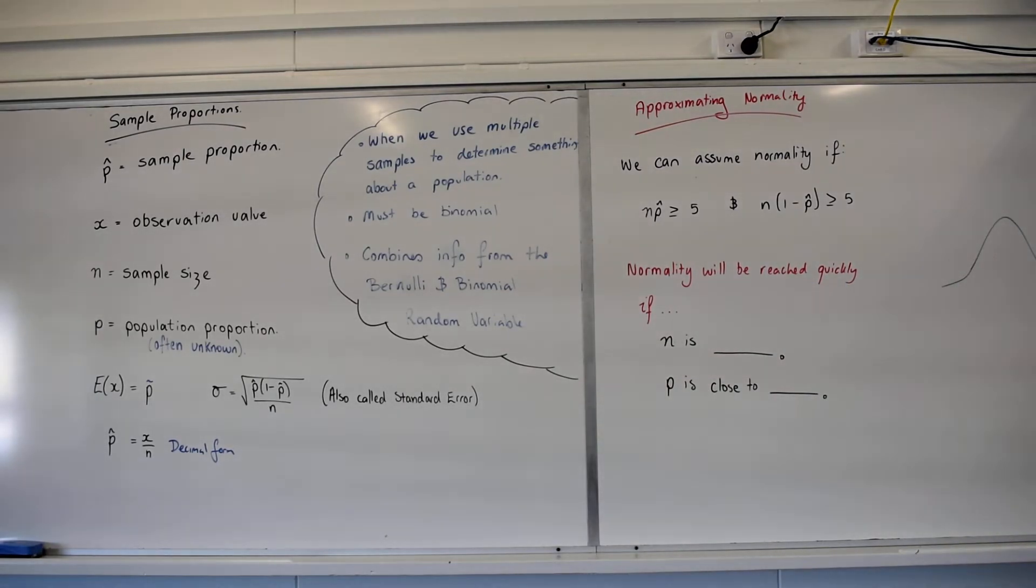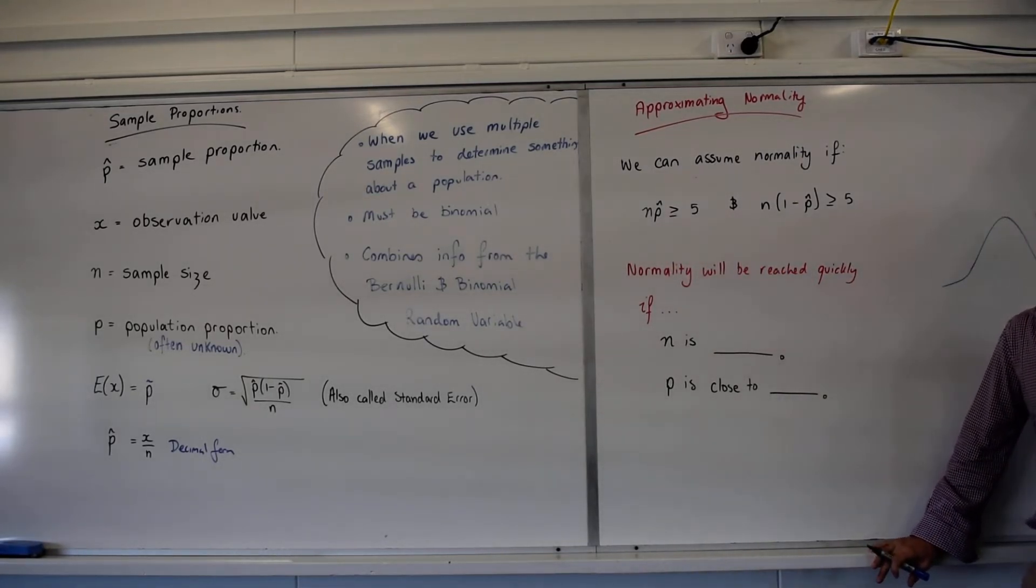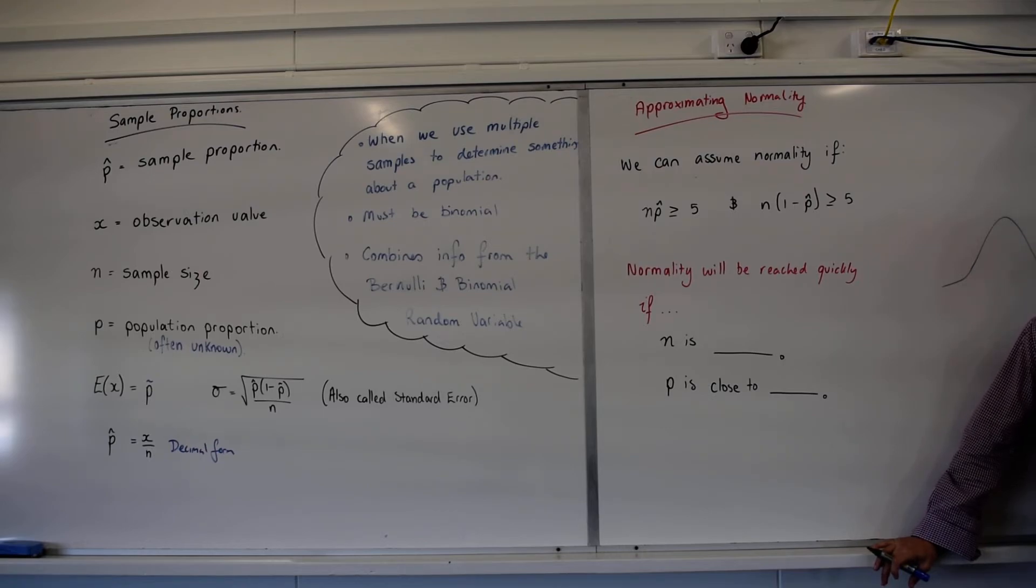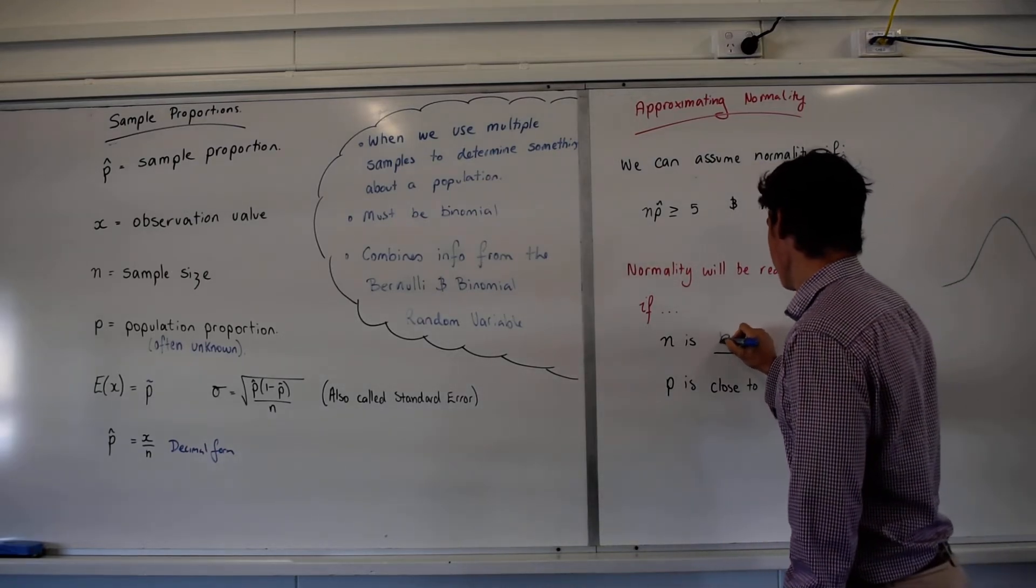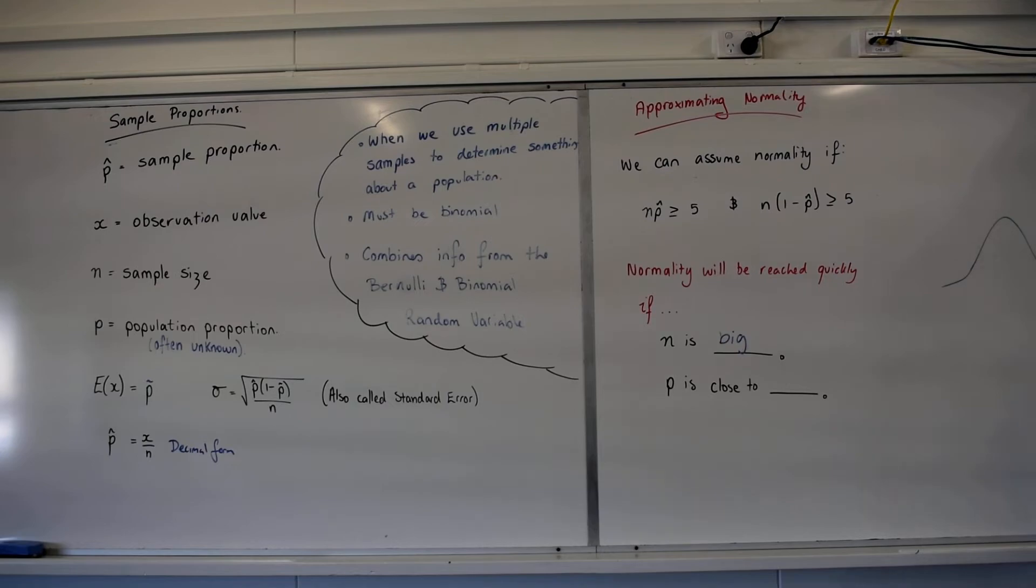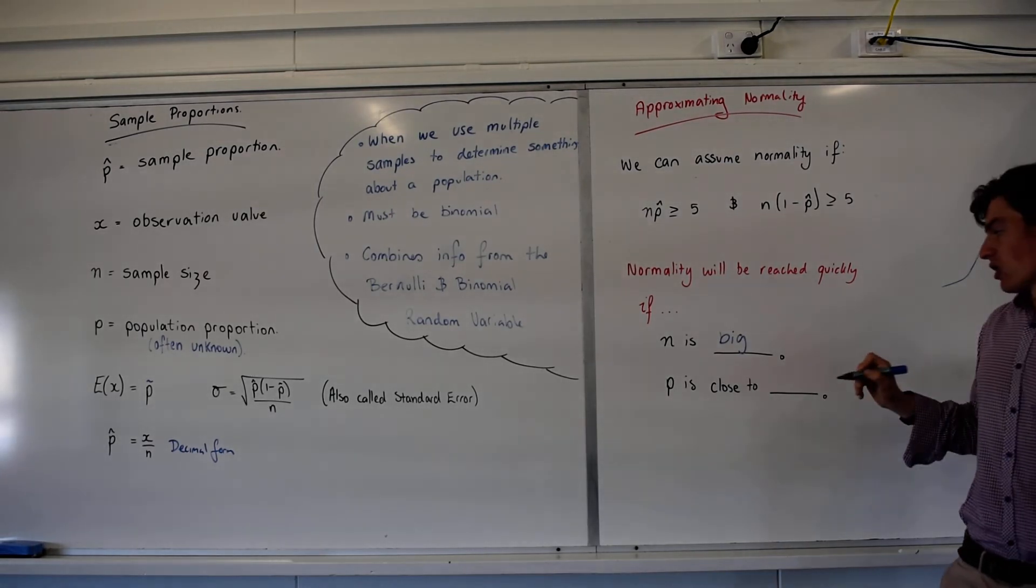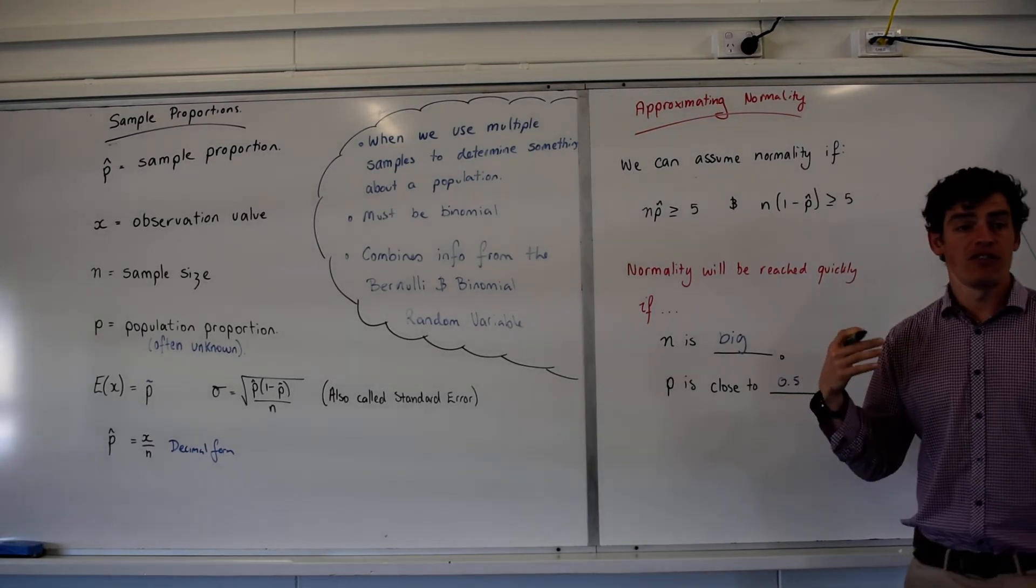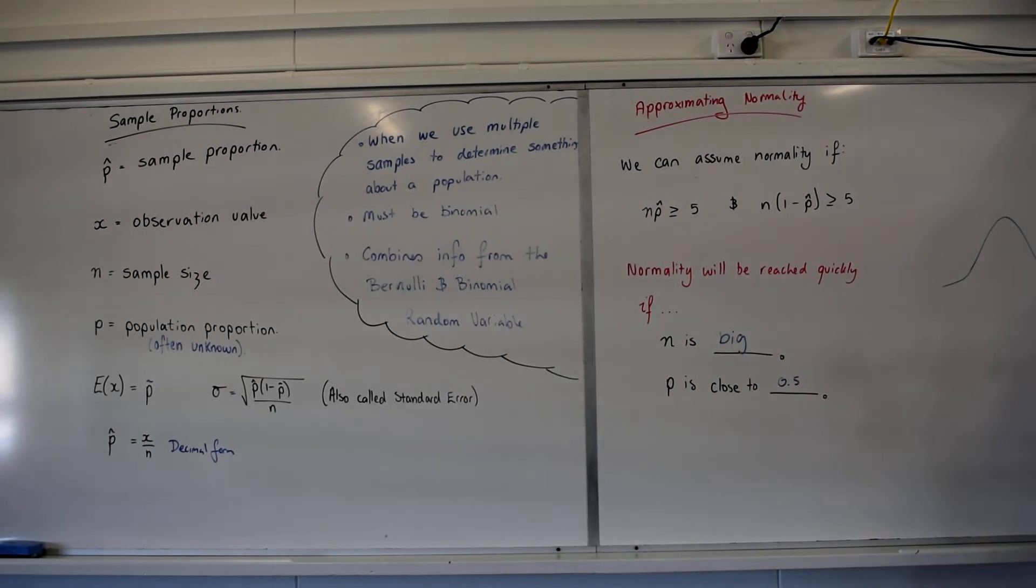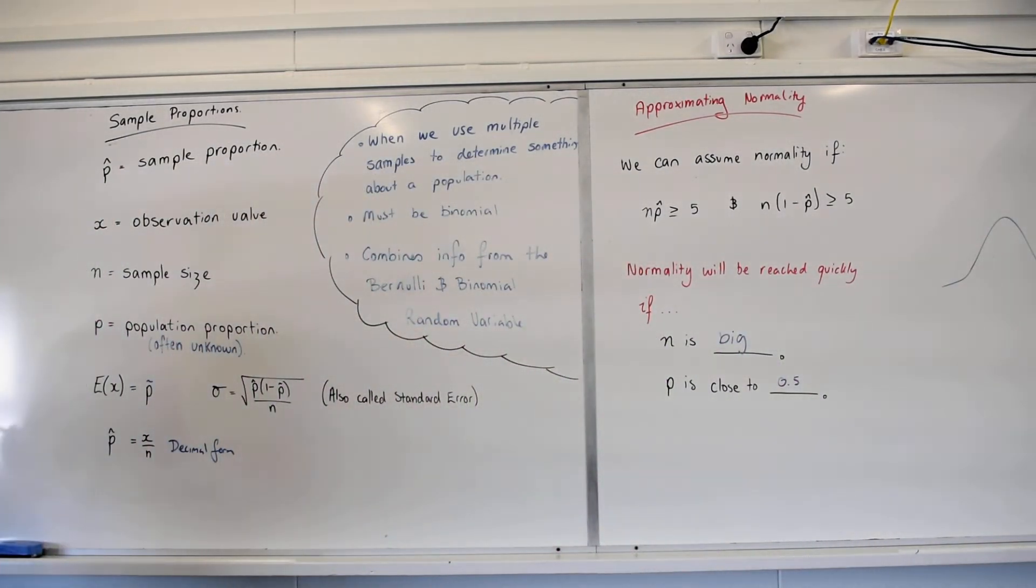Normality will we reach quicker? On a side note, normality will we reach quicker if, looking at this, what do we want n to be? Big. The bigger n is, the quicker we reach normality. The bigger the sample size, the faster we reach normality. When P is close to what number do we reach normality quickly? Remember the situation before, we had the same sample size, in one situation we were normal and the other one we weren't. 0.5. Yes, so the closer we are to 0.5, a 50-50 chance, the quicker we'll reach normality. However, the bigger the standard error will be. But that's a conversation for another day.